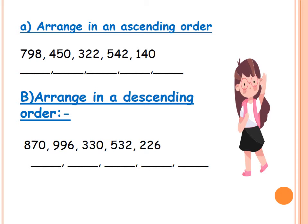Now with arranging in an ascending order. In an ascending order, we go from the smallest number to the biggest number. So, when we answer, we look for the smallest number. Where is the smallest number here? 140. Write it down and cross it out. Then look for the smallest: 322. Then, the smallest one here: 450. And 542. Then, the biggest one here: 798.